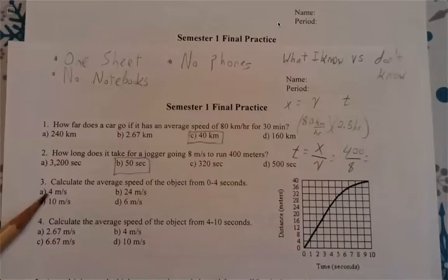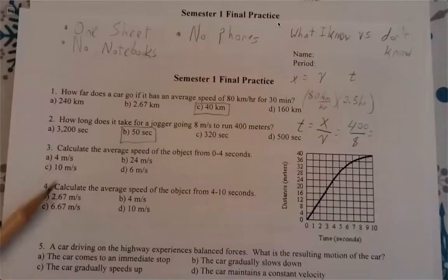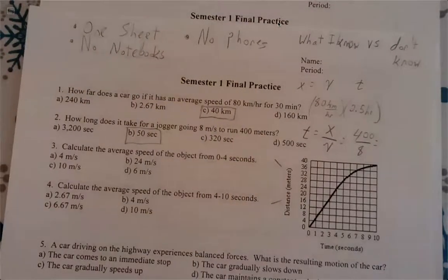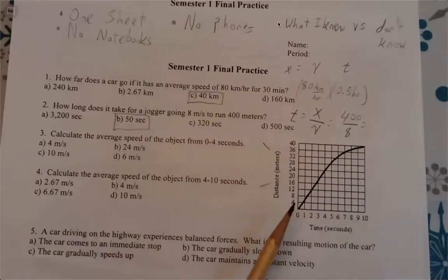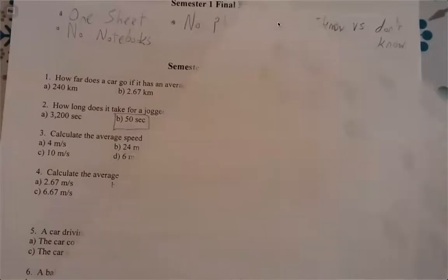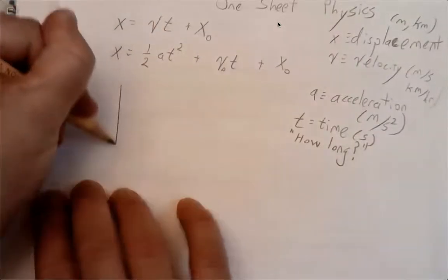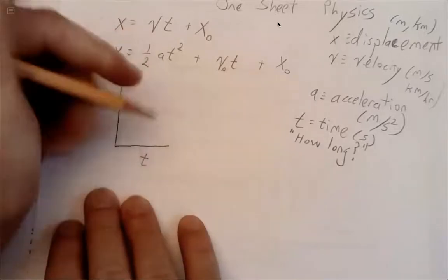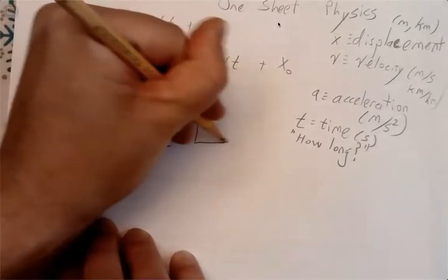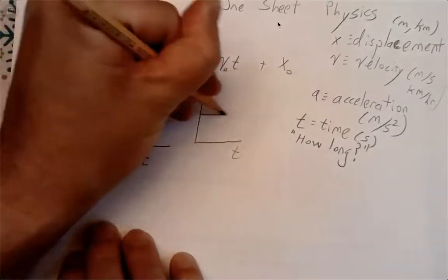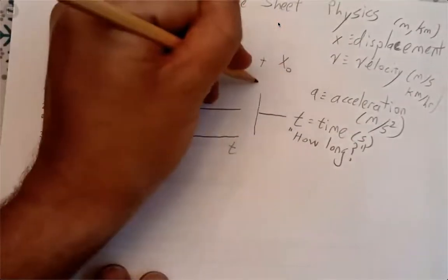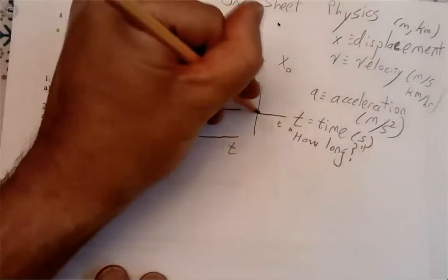Moving to the graphical analysis for problems three and four — these use the graph. Let me analyze: for an x vs. t graph, if it's a straight line, the velocity vs. time graph shows a constant positive value, and the acceleration vs. time graph shows a constant zero. I'll sketch these relationships out.